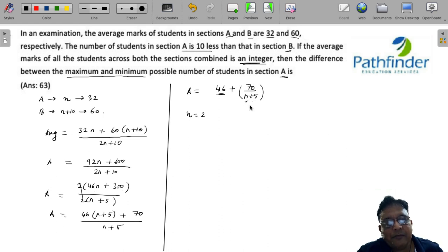What is the maximum value of N which will make this an integer? The maximum value of N is equal to 65, because 65 plus 5 will make this 70, and 70 upon 70 is again an integer.